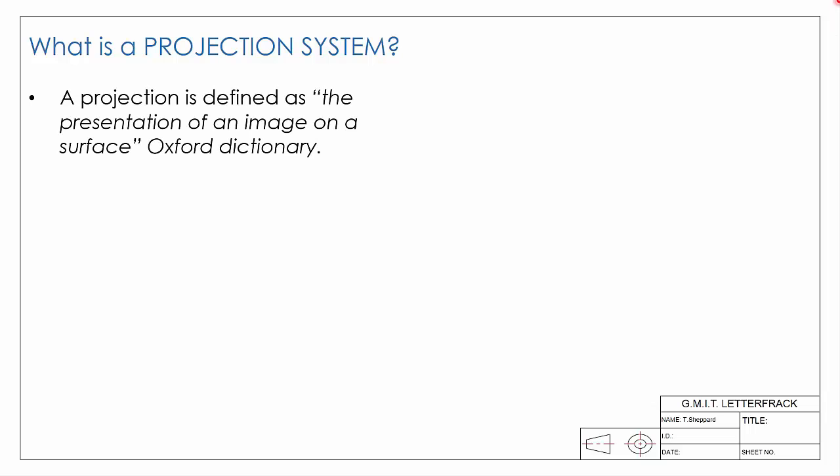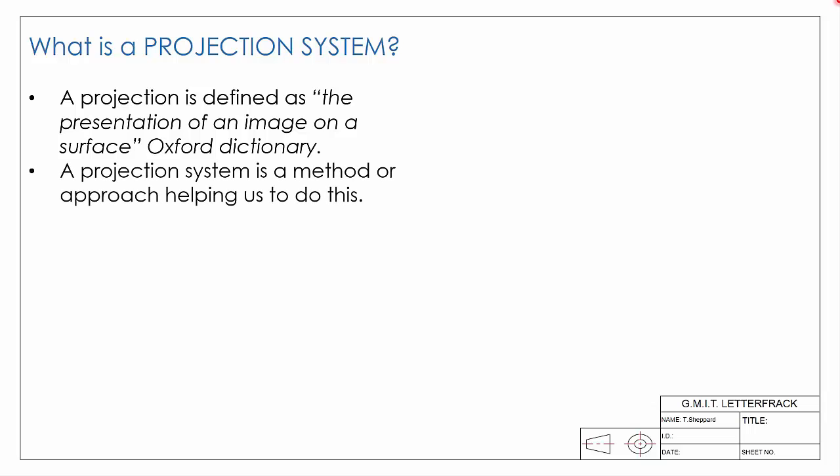A projection is defined as the presentation of an image on a surface. A projection system then is a method or a set of rules to help us actually do this.